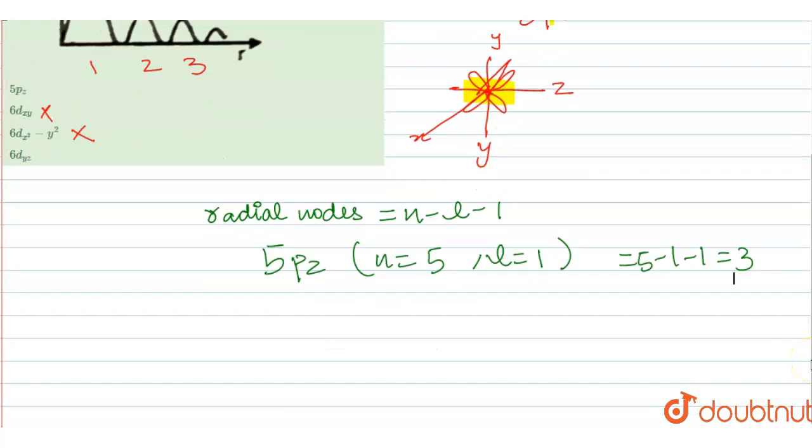Now let us find it for 6dyz as well. 6dyz, here n is 6 and l for this will be equal to 2. Number of radial nodes: n - l, that is 6 - 2 - 1 = 3.